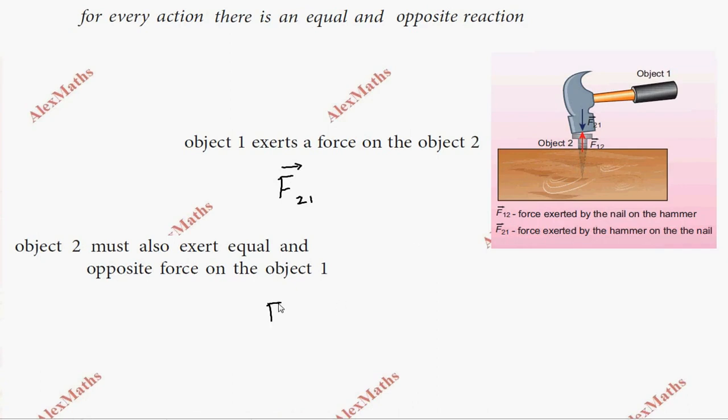Object one exerts a force on object two, and object two exerts an equal and opposite force on object one, denoted as F12 vector. From the expression, F12 vector equals F21 vector but opposite, so there's a minus sign.